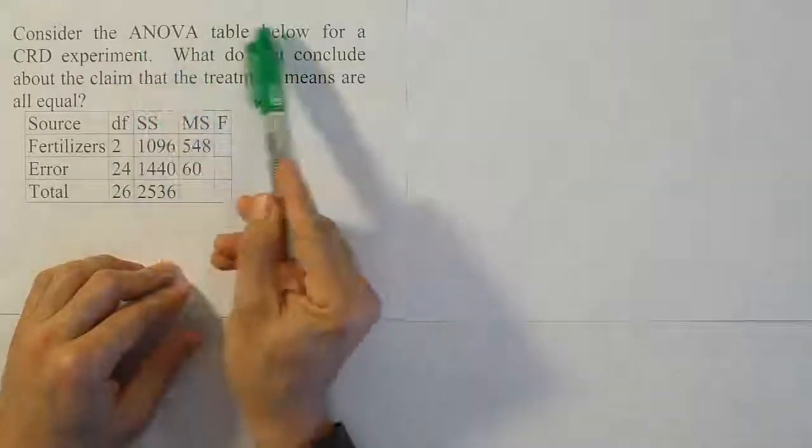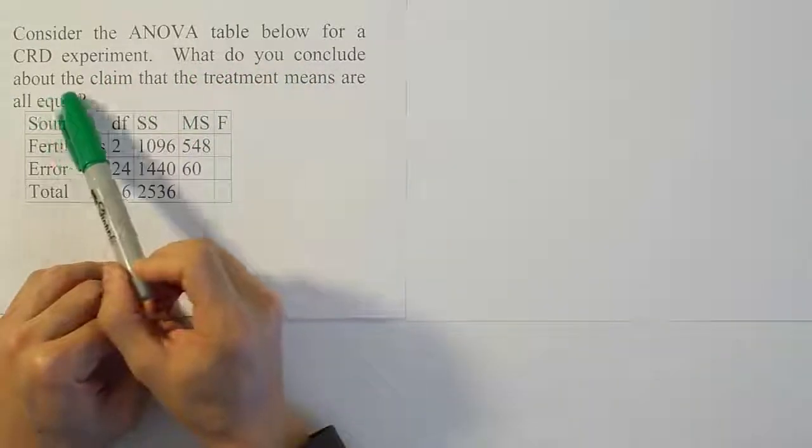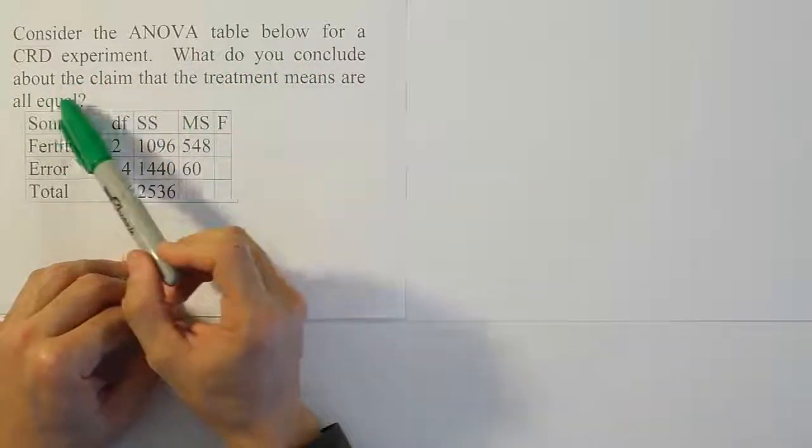In this problem they give us an ANOVA table below for a completely randomized design experiment and they ask us what do we conclude about the claim that the treatment means are all equal.